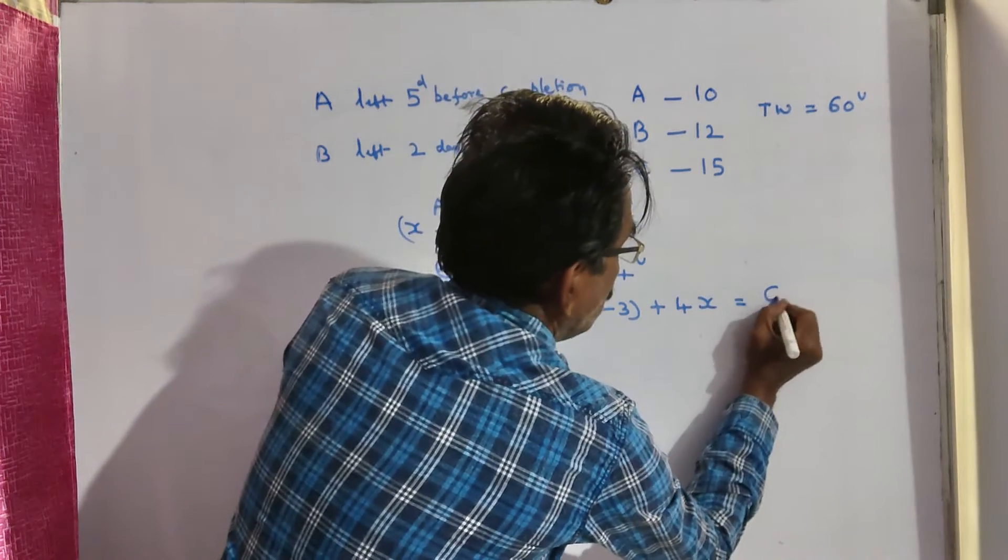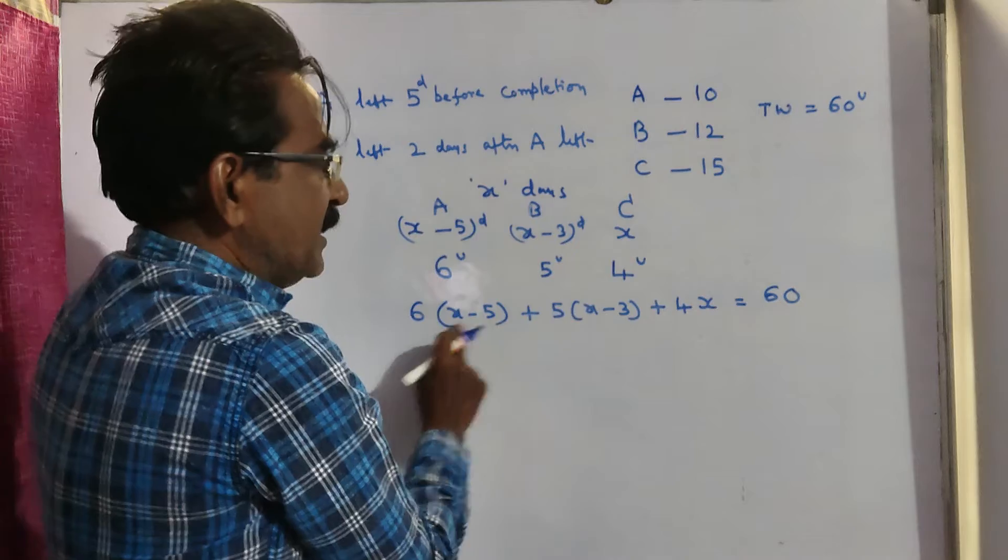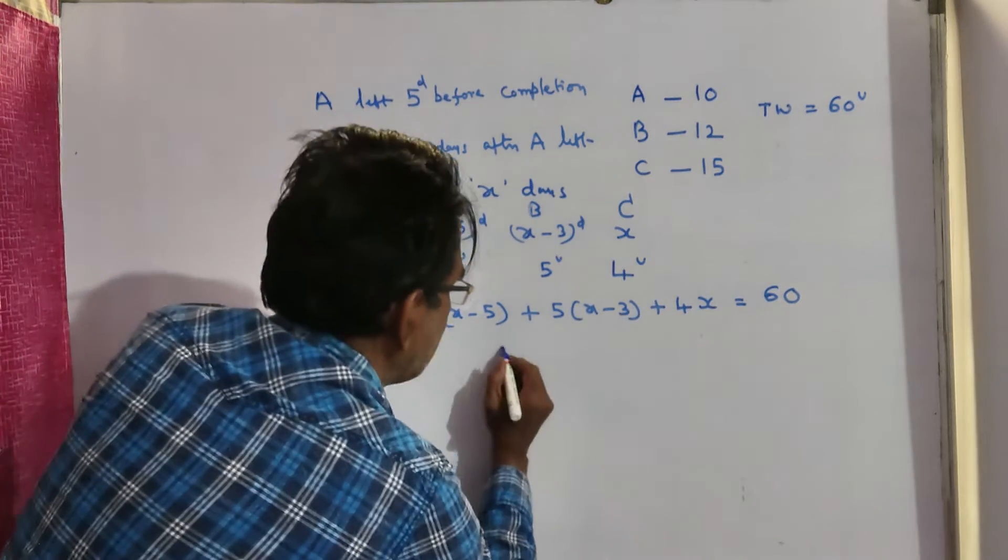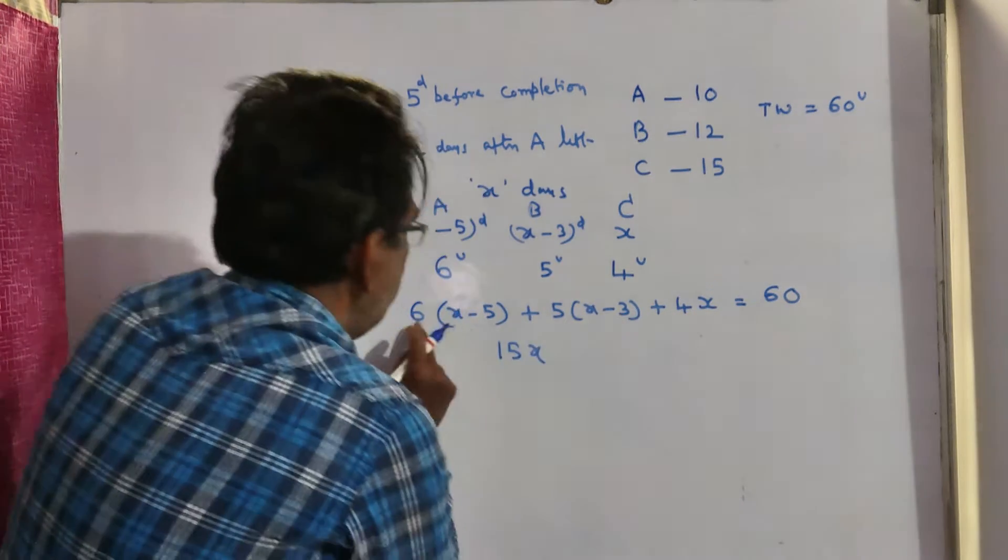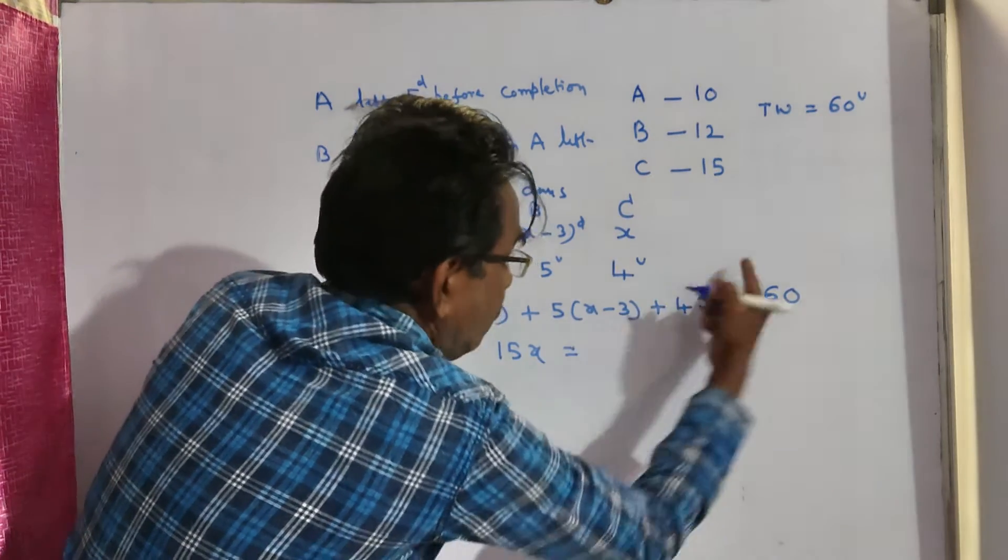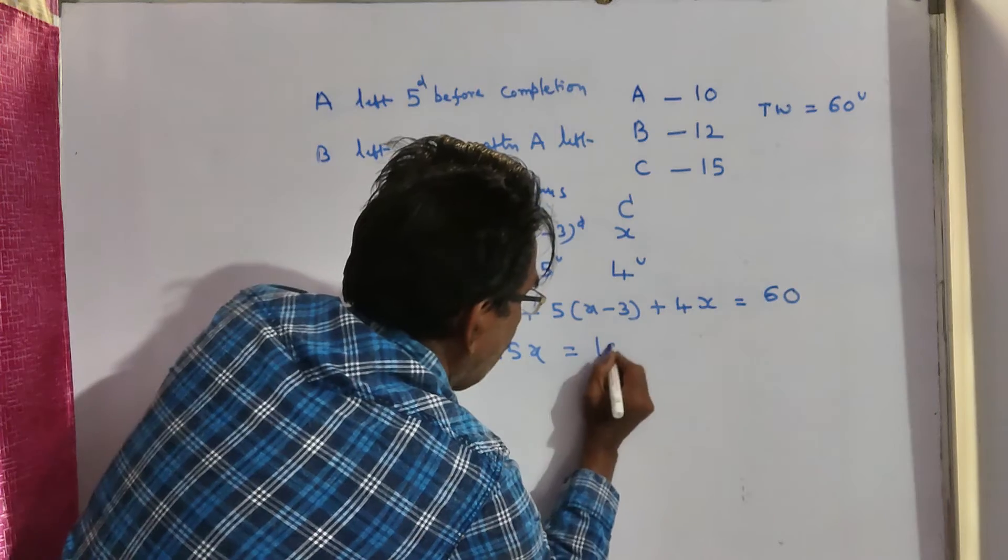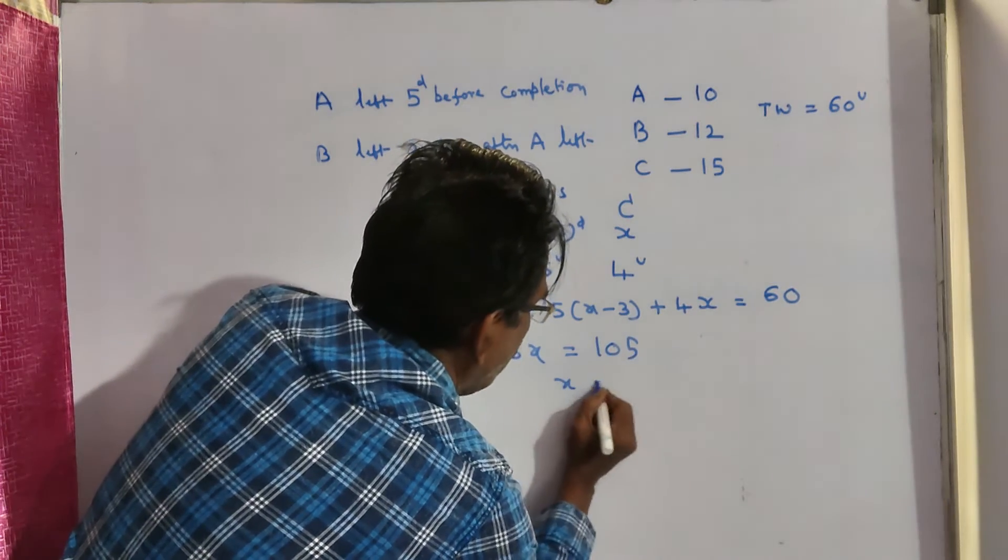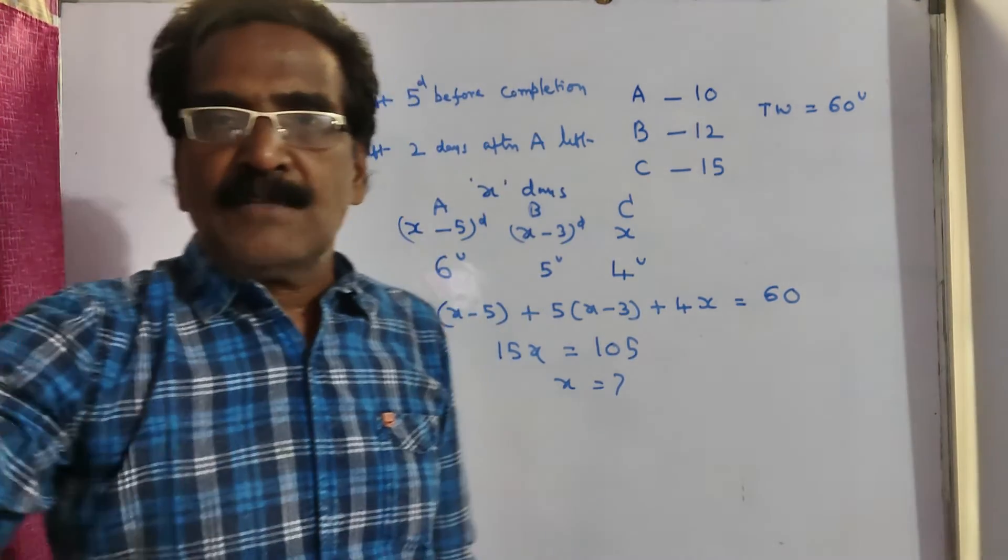So this must be equal to total units of work. 6X plus 5X, 11X plus 4X, 15X minus 30, minus 15, minus 45. Plus 45, so 105. 15X is equal to 105, X is equal to 7.